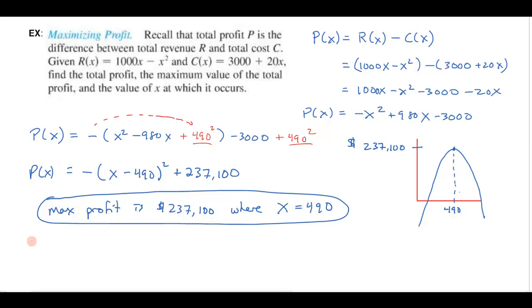So another way I could have done this, so let's put a big 'or' right here, or the maximum value occurs at the vertex, which is always at x equals -b/2a.